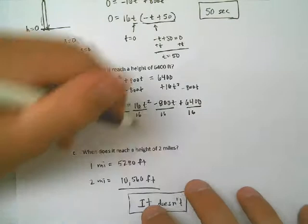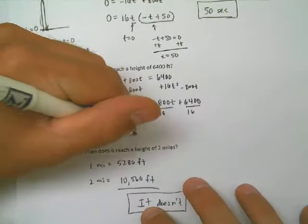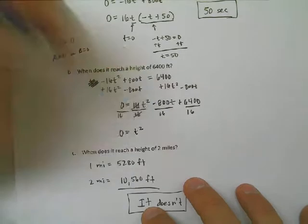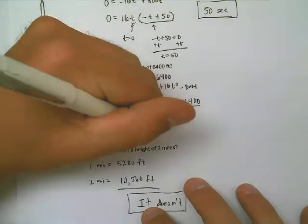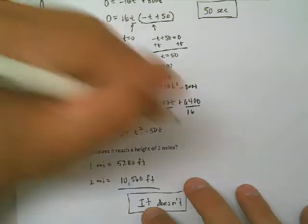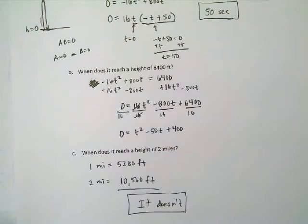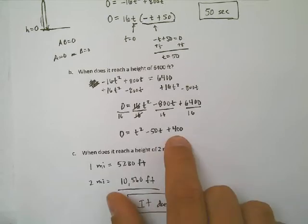So now I can go through. Can I factor that? Maybe. Let's see. 1 and 400? No. 2 and 200? No. 4 and 100? No. 50 and 8? Nope. Let's just do quadratic formula. A is 1, B is negative 50, and C is 400.